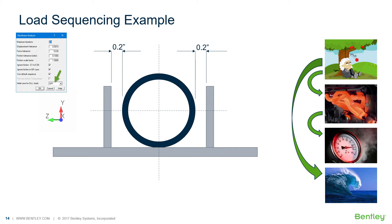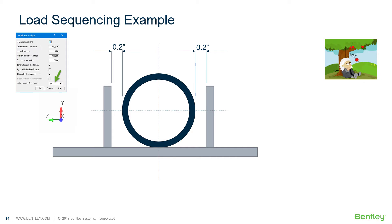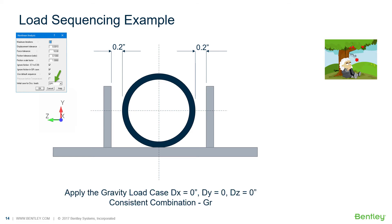Let's look at an example to see in detail what's going on. Assuming the default load sequencing shown on the right, here we are looking down the pipe inside its guided support resting on the beam with gravity applied. The 0.2 inch gap is shown on each side. To simplify this example, we're ignoring pressure. First, the gravity load case is applied resulting in zero movement, so zero forces.